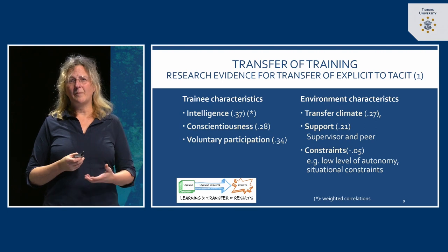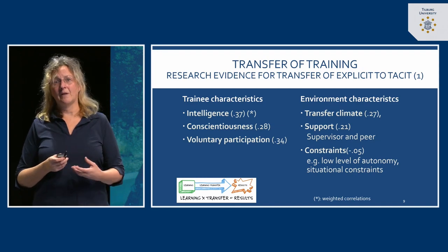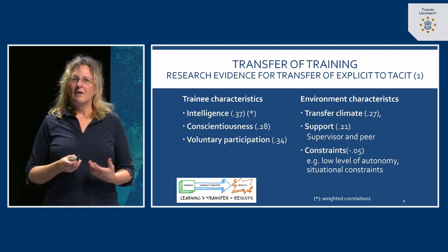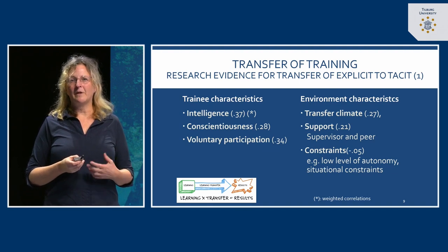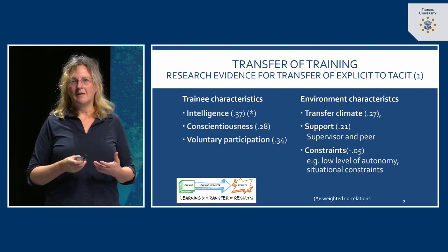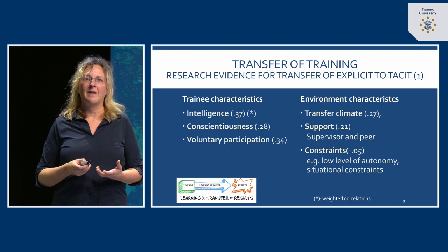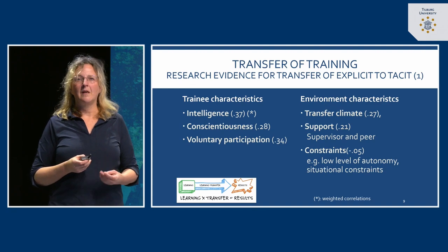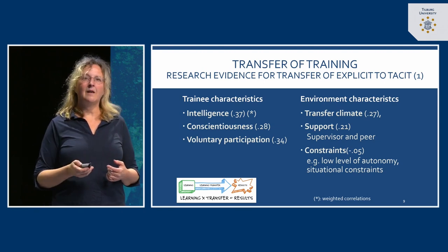Organized support: supervisors and peers can ask what was learned in the course and what is needed to implement it in practice. Finally, there are constraints in the work design that can hinder the transfer — for example, if people have a low level of autonomy and their work is really dictated by others, there is little leeway for trial and error. There might be situational constraints where it's just difficult to practice what you learned. As you can see from the effect sizes — 0.17 and 0.21 — transfer climate and support are important conditions.